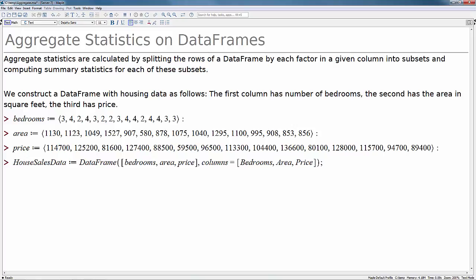We'll begin by constructing a data frame with housing data as follows. The first column has the number of bedrooms. As we can see from this, the number of bedrooms can be either 2, 3, or 4.